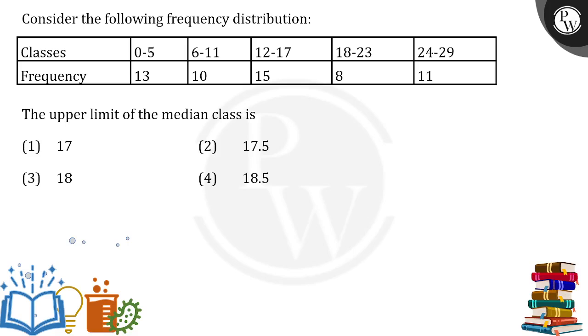A frequency distribution table is given and we need to find the upper limit of the median class. We observe that for the class 0 to 5, the frequency given is 13.